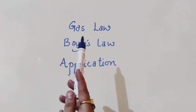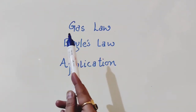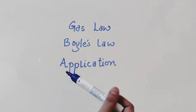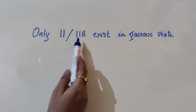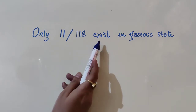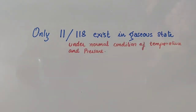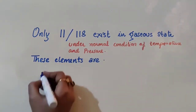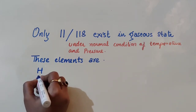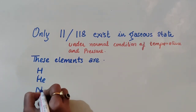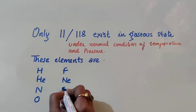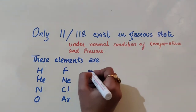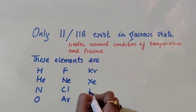In this video we are going to discuss one of the important topics of chapter States of Matter — that is Boyle's Law and its application. Only 11 elements out of a total of 118 elements known today exist in the gaseous state under normal conditions of temperature and pressure. These elements are hydrogen, helium, nitrogen, oxygen, fluorine, neon, chlorine, argon, krypton, xenon, and radon.